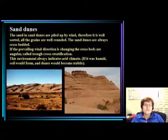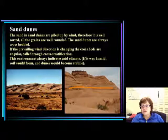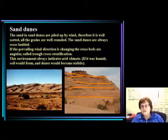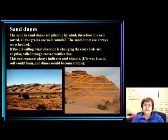If the prevailing wind direction is changing somewhat, the cross-beds will be very characteristic. They are called trough cross-stratification. Each layer has a little different thickness and the angles of the foresets are different from layer to layer because of changes in the trade wind direction. This is a typical picture from Zion National Park showing the sandstone in that valley.